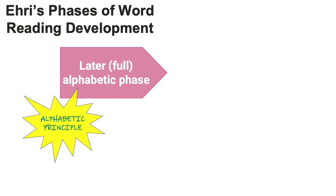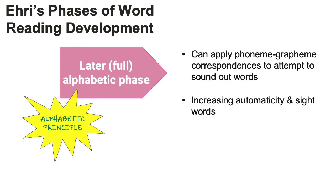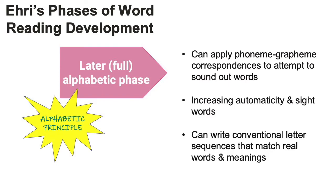Next is the full alphabetic phase. This is when children pick up the all-important alphabetic principle — remember, this principle is essential to being able to decode words. In this phase, children continue to learn more phoneme-grapheme correspondences and can start attempting to sound out entire words. Because they're expanding their phonemic awareness and orthographic mapping, children will gain more automaticity and know more sight words. Children will also continue to understand letter sequences in writing, and the letters and words they attempt to write resemble real words more and more.